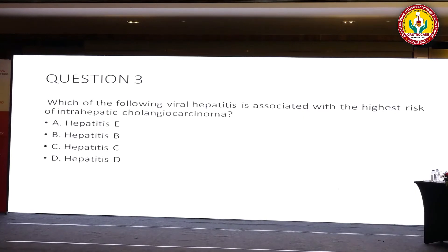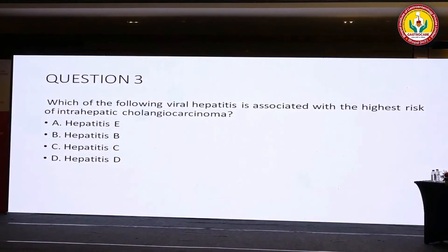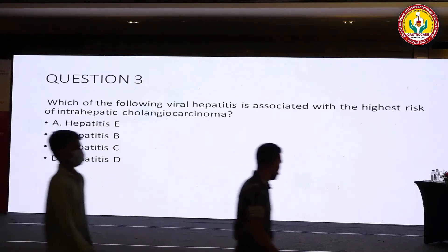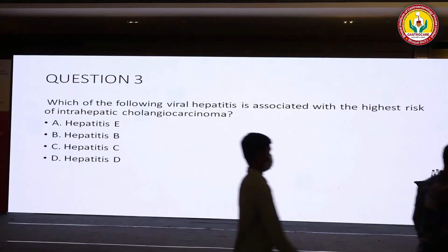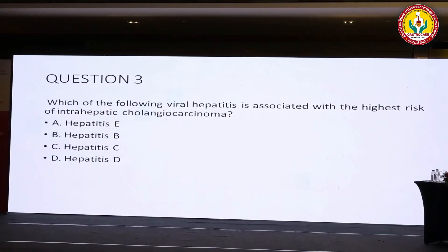Third question: which of the following viral hepatitis is associated with the highest risk of intrahepatic cholangiocarcinoma? Option A: Hepatitis E. Option B: Hepatitis B. Option C: Hepatitis C. Option D: Hepatitis D. You have to select the correct answer — A, B, C, or D.